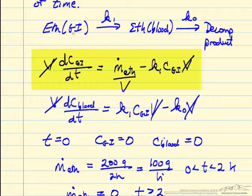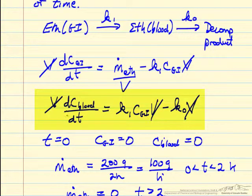We're feeding ethanol in and then removing it in a first-order process into the bloodstream. In the bloodstream we have a term where we're adding ethanol from the GI tract and then we decompose into byproducts in a zero-order reaction.